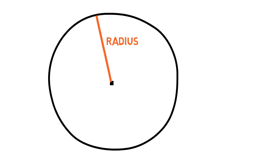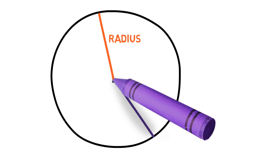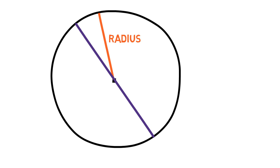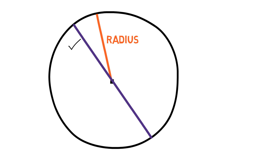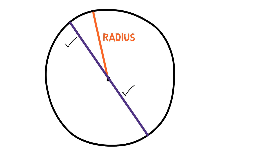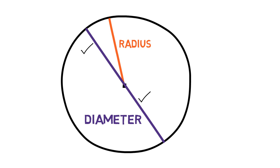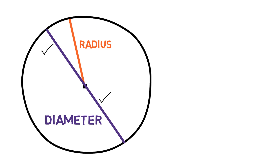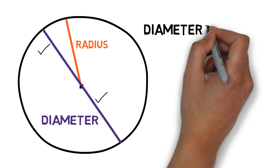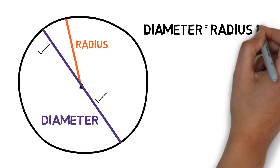Now what if I drew a straight line starting at one point on the circle, passing through the center and going all the way to another point? Some of you may say that this is one radius here and another one here, and you would be right. But there is another term for such a line — it's called the diameter of the circle. The diameter is equal to the radius times 2.